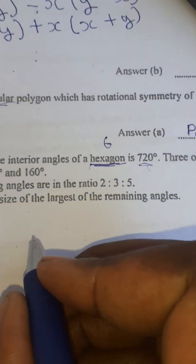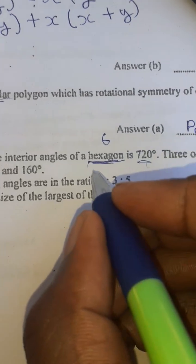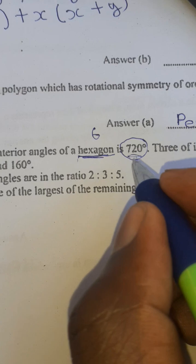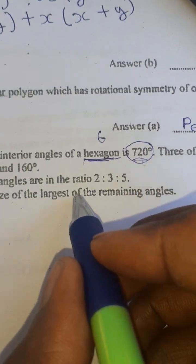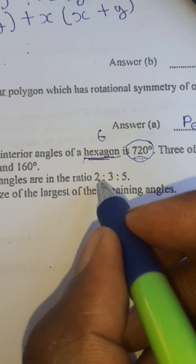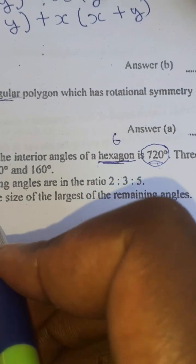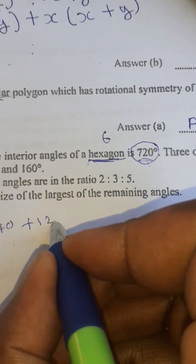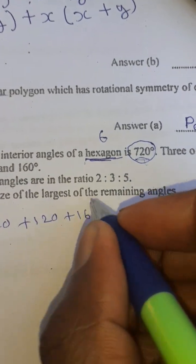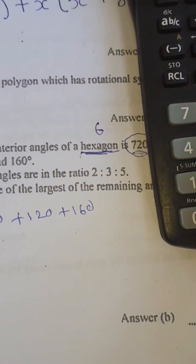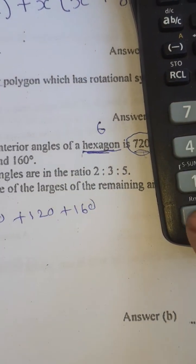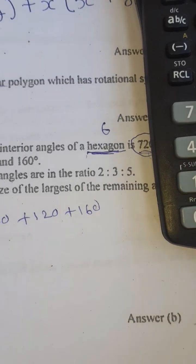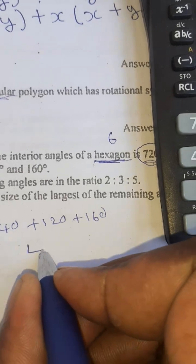This one is a bit simple. Hexagon is six sides and the sum of interior angle is 720. We're asked to find the largest remaining angle which are in this ratio 2:3:5. We're going to add first 140 plus 120 plus 160. Using my calculator, 140 plus 120 plus 160, the total is 420.